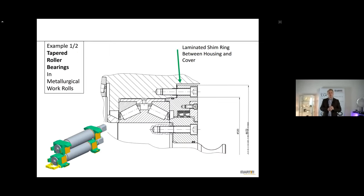Just for instance, you'll see here is a part of a drawing from SMS group, we are grateful to use that. And that is a work roll in a rolling mill. And you have their double tapered roller bearing and between the housing and the cover, you'll find a multi-layered laminated shim, for instance.